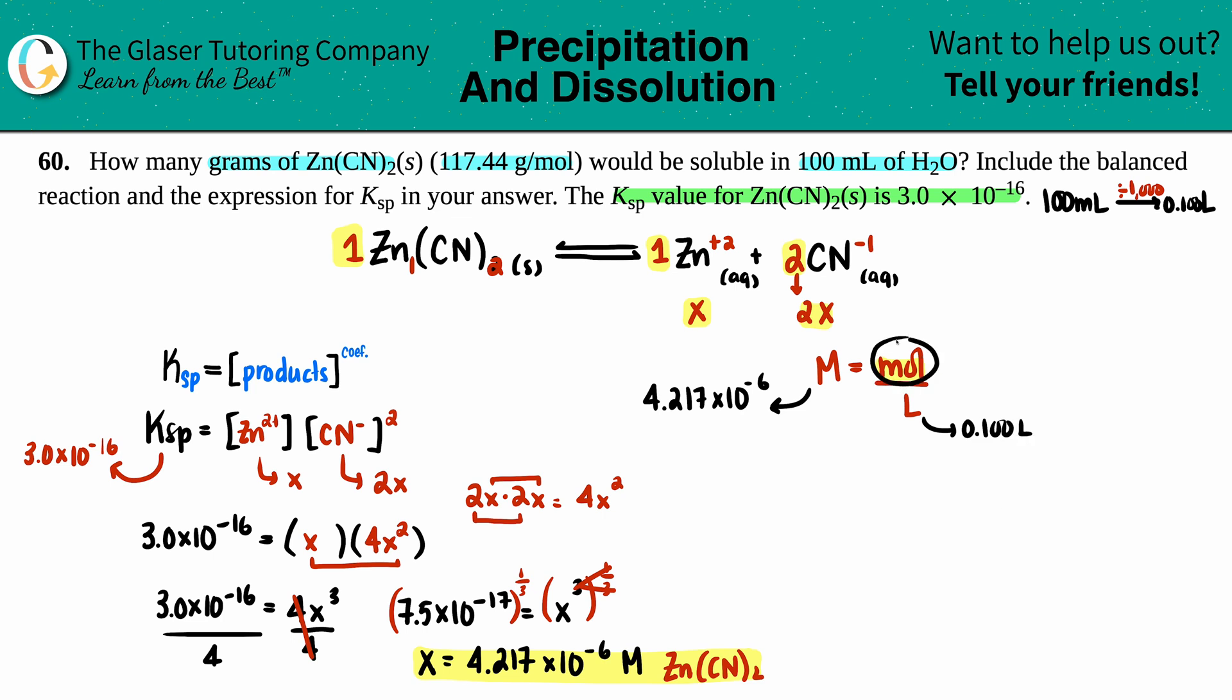Now I can find moles. Moles equals molarity times liters. My mole value equals 4.217 times 10 to the negative 6th times 0.100, which gives 4.217 times 10 to the negative 7th moles of Zn(CN)2.